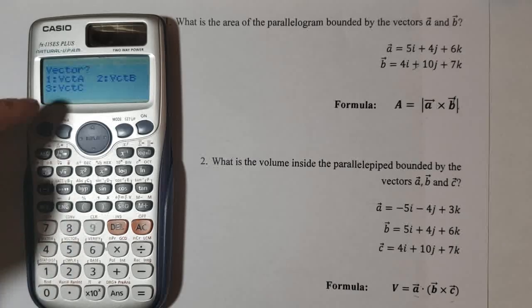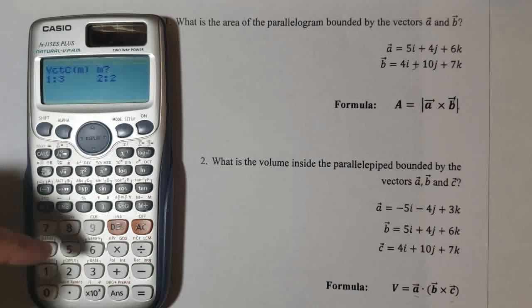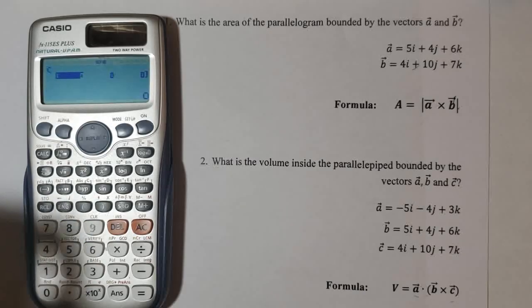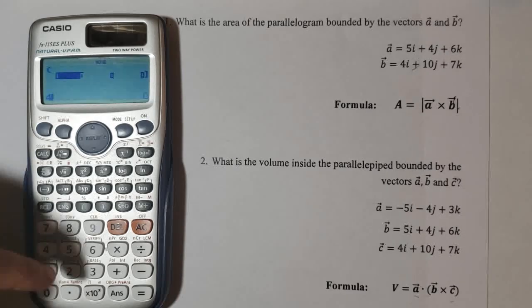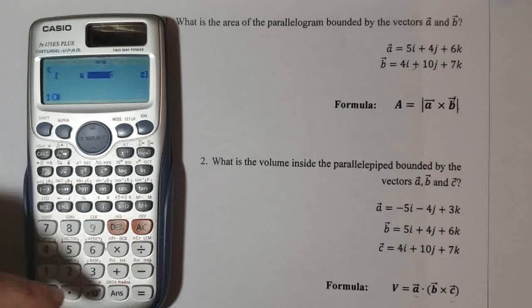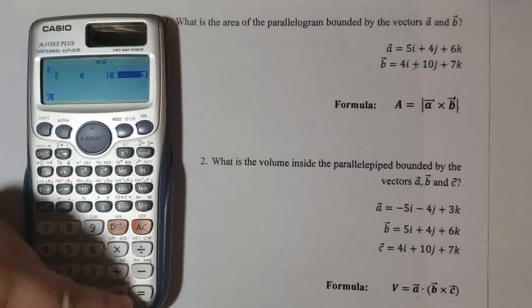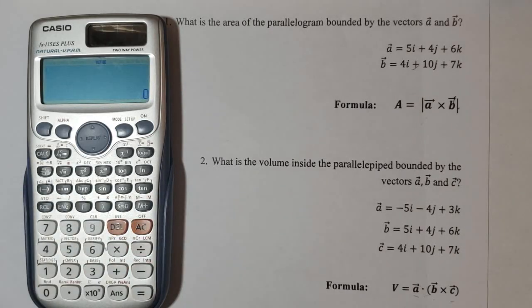And then the last vector c. Option 8, 3 for vector c. And 1 for the 3 directions. Now we have 4 equal, 10 equal, 7 equal, AC.